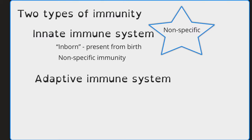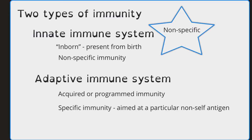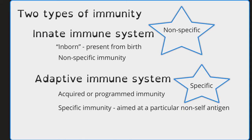The adaptive immune system, on the other hand, is acquired or programmed immunity. This immune response is specific, and it is aimed at a particular non-self antigen. This immune system is much more complicated because of its specificity. In this part of the immune system, you'll hear about cells such as T cells or B cells, where there is a specific interaction between the cell and the antigen. Things like memory cells are created, and antibodies are made.